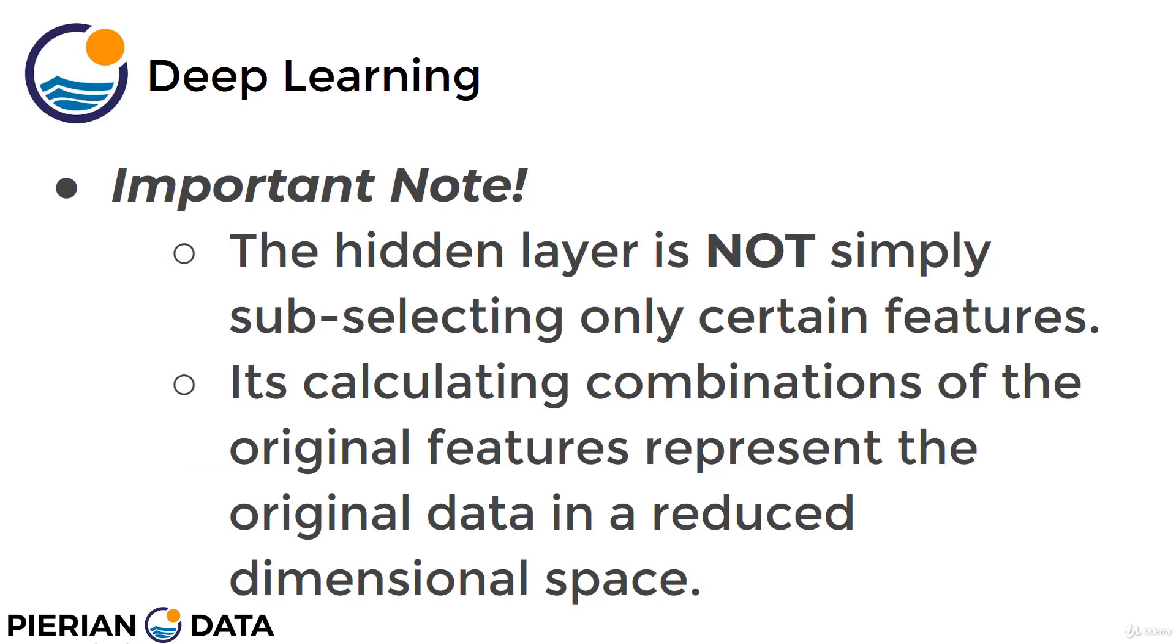Now a really important note, a lot of students get confused by this term reduction in dimensionality. Keep in mind, those hidden layers is not simply sub-selecting only certain features. So it's not like you start off with 10 features and then choose eight of those 10 to continue on with. What you're actually doing is you're calculating combinations of the original features to represent the original data in a reduced dimensional space. So you're not sub-selecting features. You're actually taking a little bit of all the features, some percent depending on the way the autoencoder is trained.